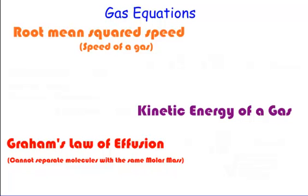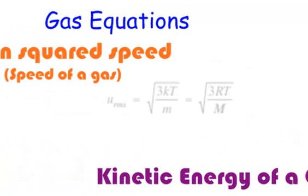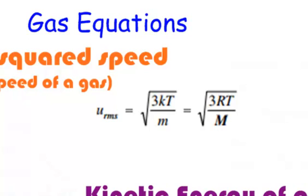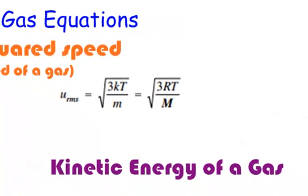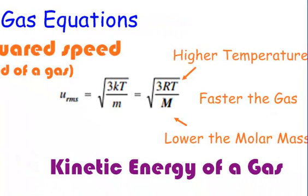We have a bunch of gas equations, and this is going to be probably the most important next two slides for you to really go over. When we take a look at the root mean squared speed, that is called the speed of a gas, and we have a nice easy equation for that. It is the square root of 3RT over molar mass. Temperature's on the top, molar mass is on the bottom, so the higher the temperature, the lower the molar mass, that means the faster the gas. If the gas is smaller in terms of its molar mass, it's going to be faster as well.